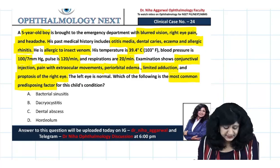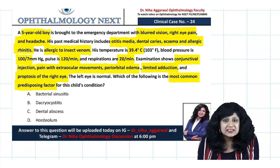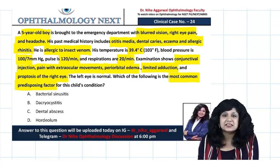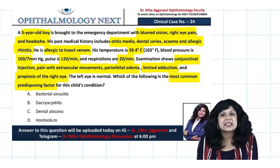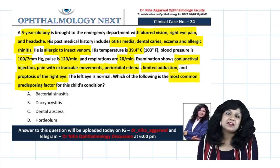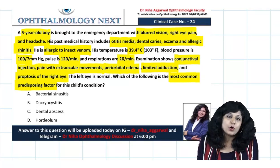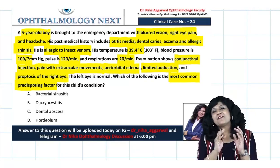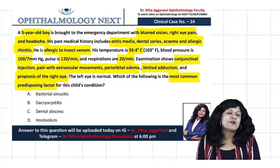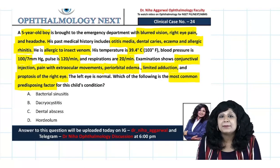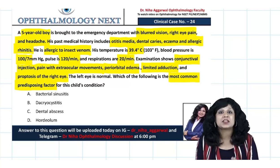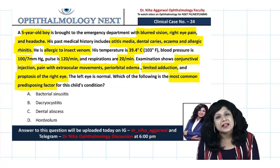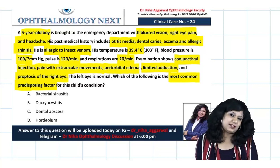Your options are bacterial sinusitis, dacryocystitis, dental abscess, and hordeolum. Now I will tell you a very easy way of approaching this complex question with a lot of risk factors, past history, and examination findings.